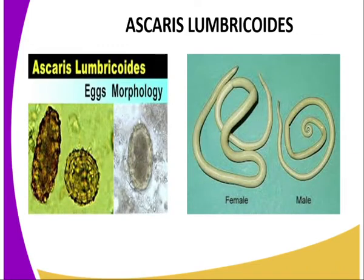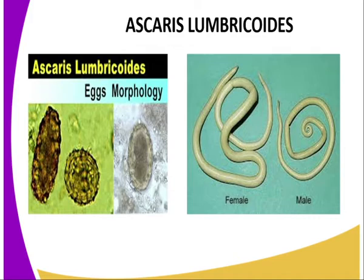The genus Ascaris is the largest nematode parasitic to humans. It is characterized by a brownish yellow color with mouthparts having three lips, as you can see from our screen. The male is about 25 centimeters long and 0.4 centimeters in diameter, while the female is about 35 centimeters long and 0.5 centimeters in diameter. As you can see, the female is larger than the male Ascaris lumbricoides.